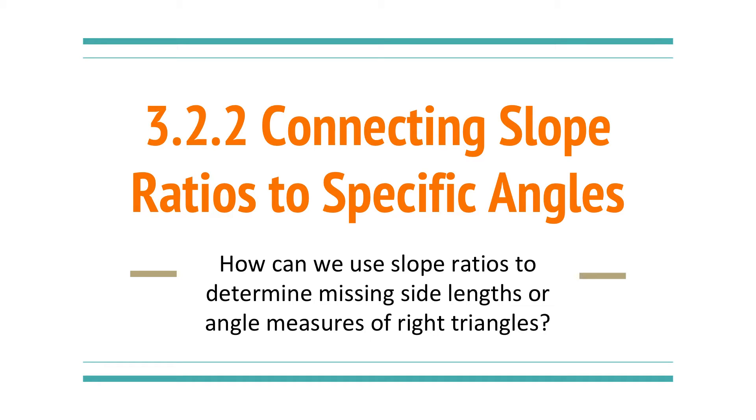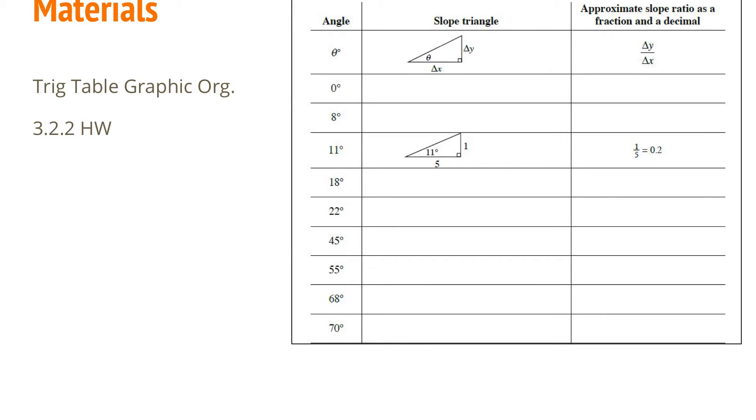We already talked about slope angles, slope triangles, and slope ratios. Now let's see if we can try to see these patterns that are going to connect everything together. You're going to need this graphic organizer that is in the back table - you'll need it towards the second half of the class - and you also need the homework which I'll give to you at the end.